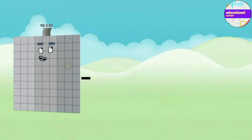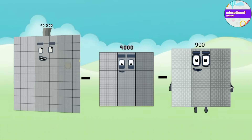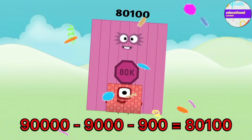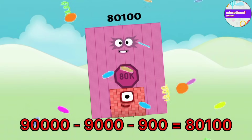90,000 minus 9,000 minus 900 equals 80,100.